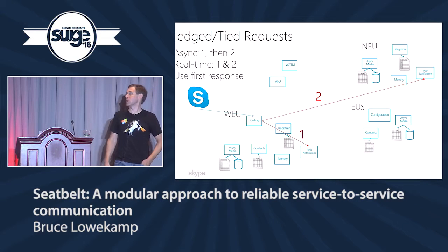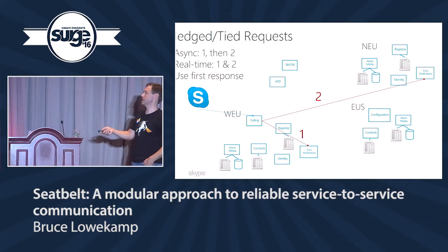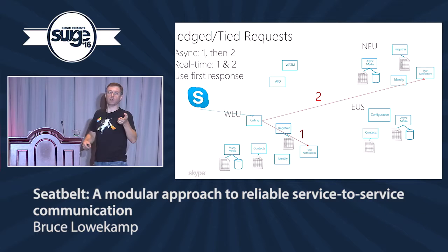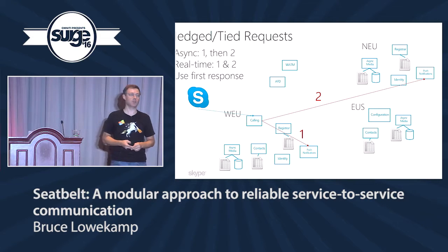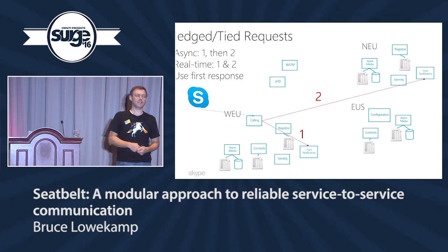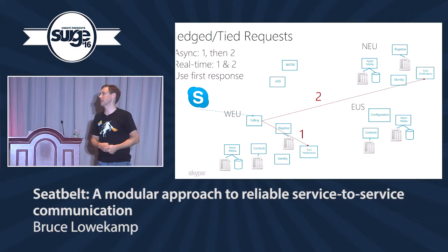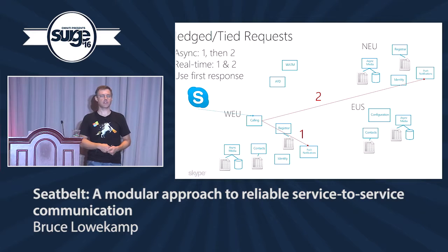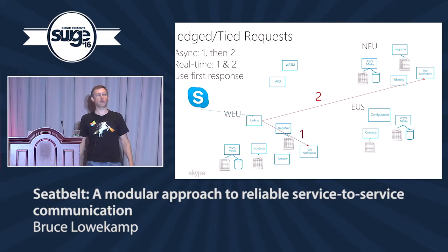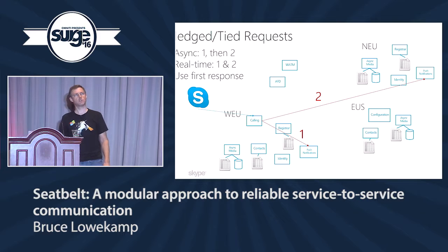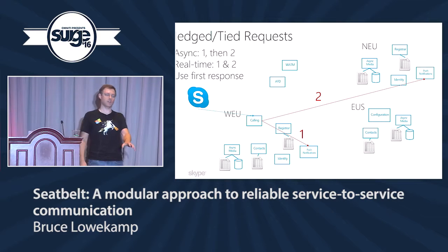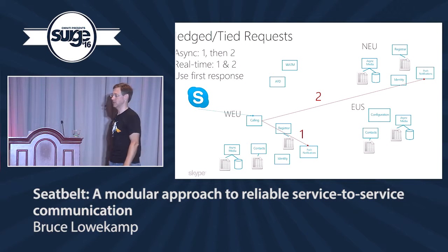We've implemented hedged and tied requests. For calling — sending a push notification to make your phone ring — we can do a tied request and send to both primary and a secondary deployment. In practice we haven't used tied requests. We found our 99.9th percentile for a registry lookup is within about 100 milliseconds, and we're okay waiting that long. We do hedged requests at about 250 milliseconds. Depending on the team's particular use case they can use whichever approach they want.